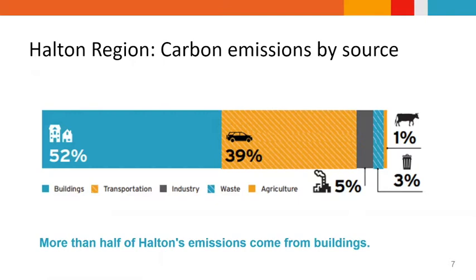TAF creates an annual carbon emissions inventory every year, and that's where this information comes from. If you are interested in this kind of data, you can go on our website and see what the greater Toronto-Hamilton area looks like by region. For this slide, this is the Halton region by carbon emission source. As you can see, for buildings Halton actually has 52%, which is a lot of emissions from buildings. 52% is above average for the GTHA, and Halton has the highest natural gas emissions as well as the highest emissions per capita, excluding industry, in the GTHA.